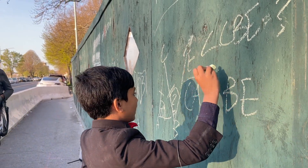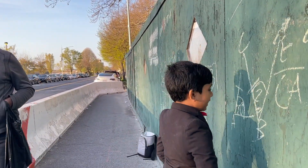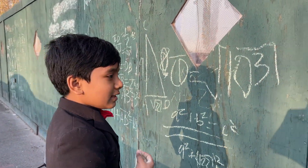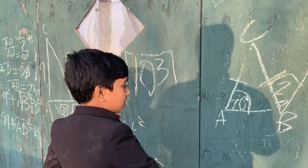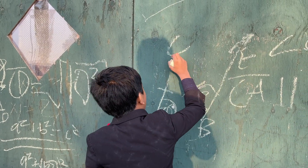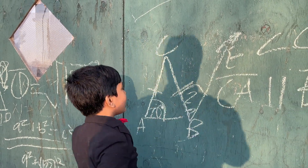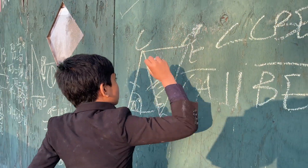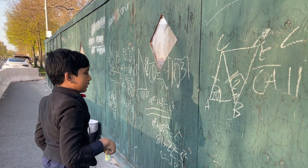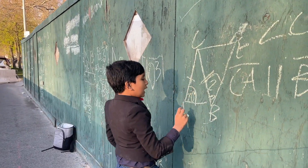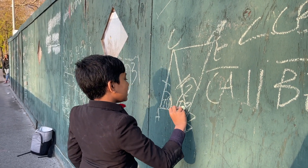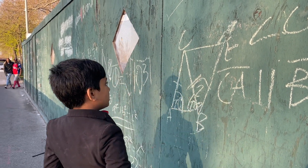Now, how do we find angle CBE? The answer is actually pretty simple. What we can do is sort of make this a parallelogram. With this parallelogram shape, because we have an isosceles over here, that means this angle is 70 as well.